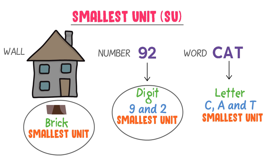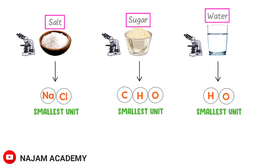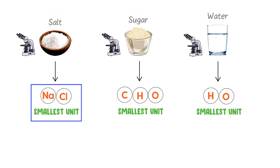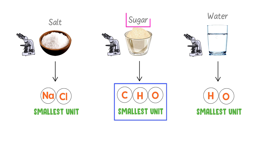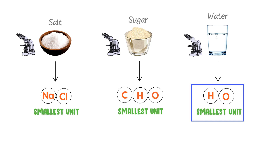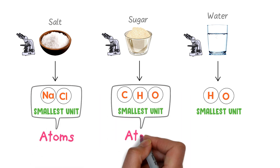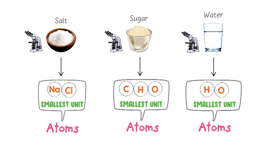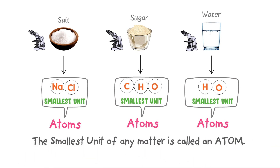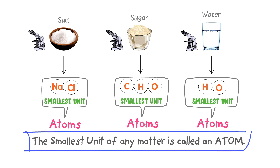A letter like C, A, or T is the smallest unit of any word. Salt, sugar, and water are all matter, so sodium or chlorine is the smallest unit of salt; carbon, hydrogen, or oxygen is the smallest unit of sugar; hydrogen or oxygen is the smallest unit of water. In science, we call these smallest units atoms. Therefore, an atom is defined as the smallest unit of any matter.